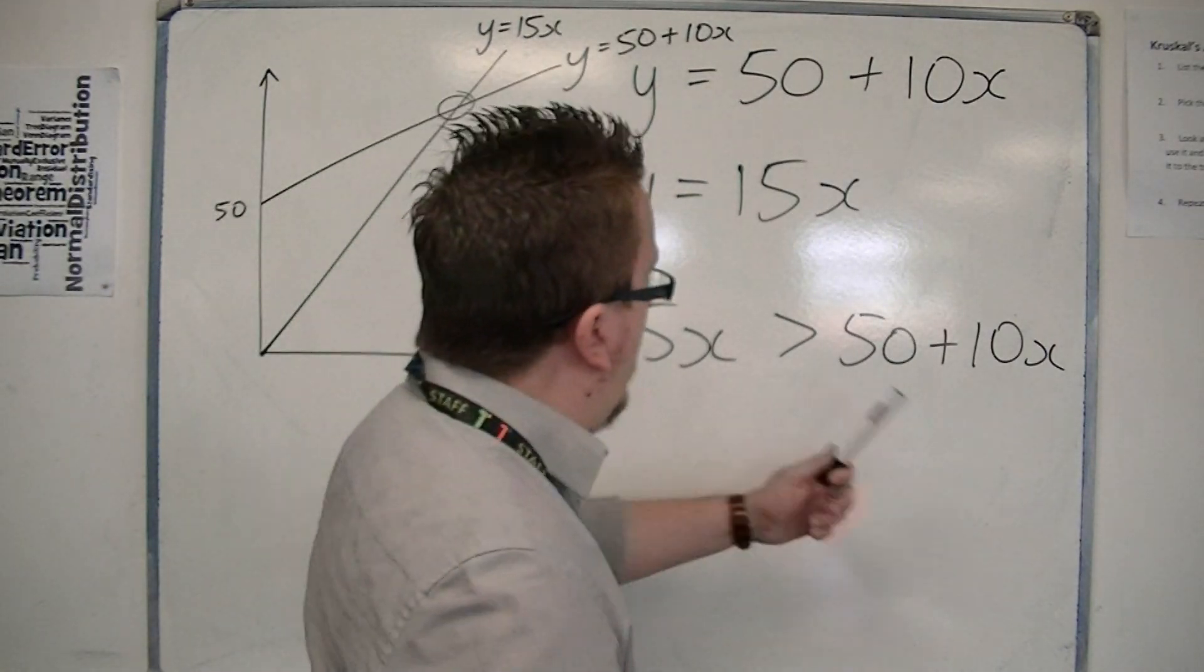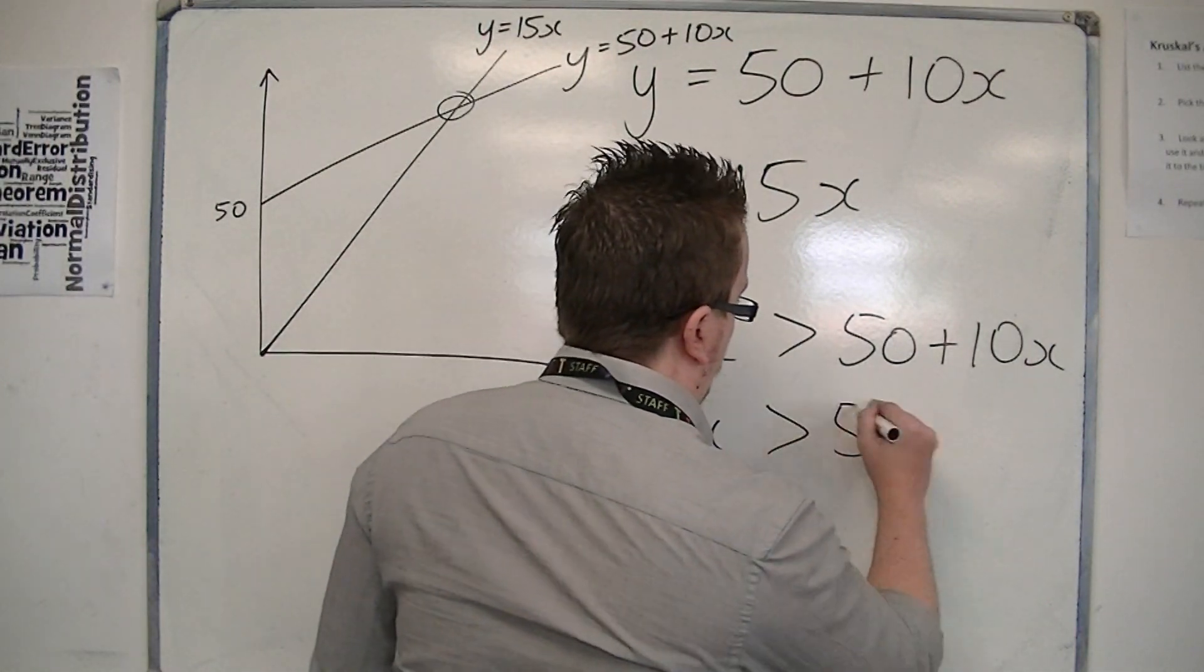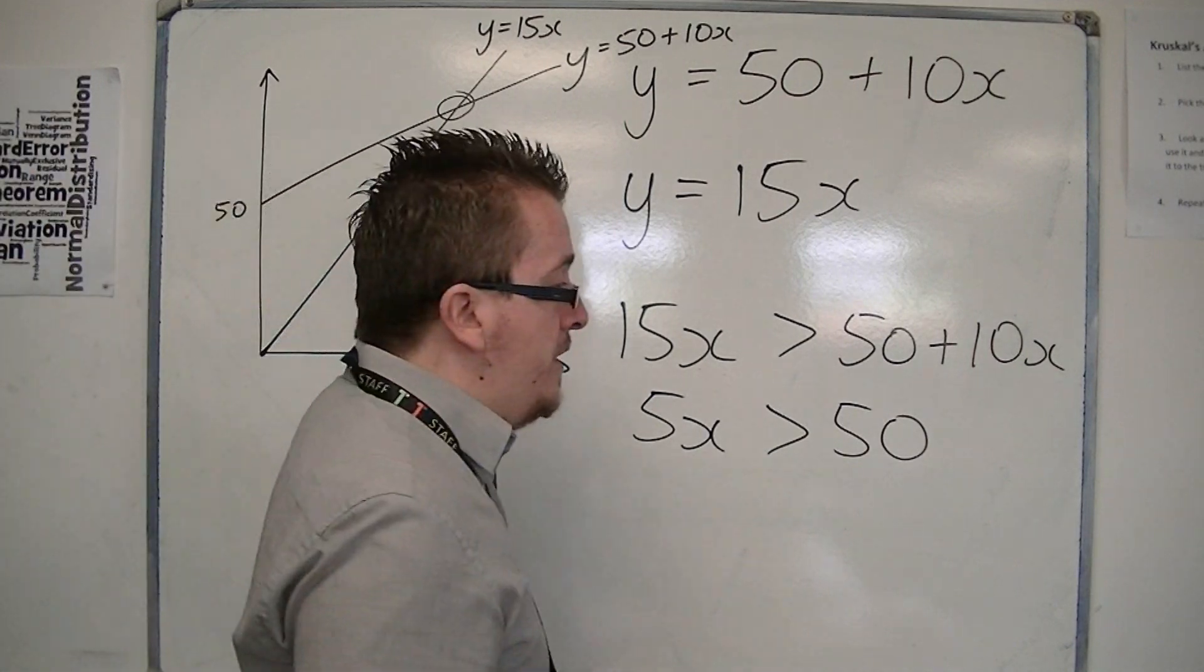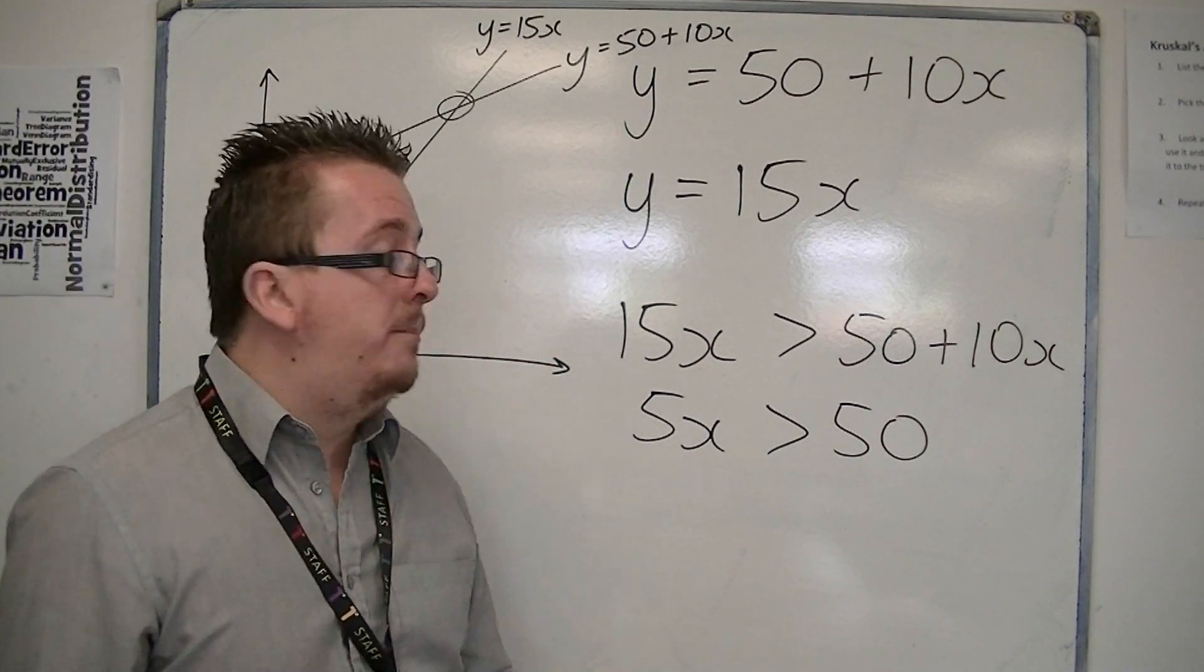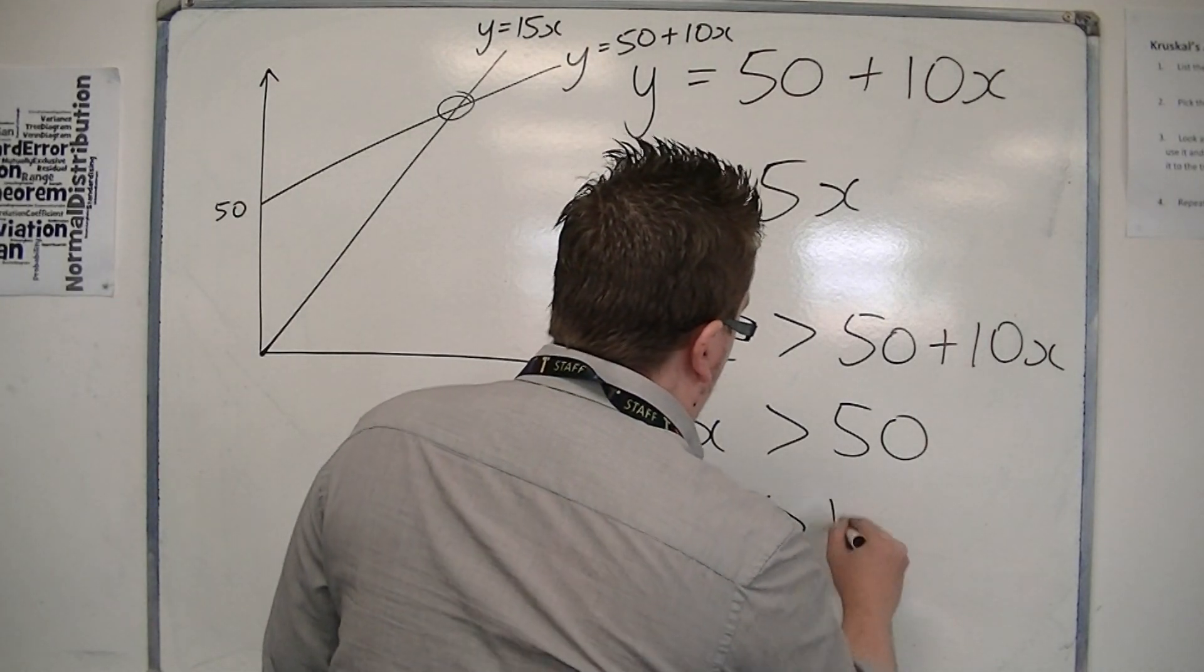So I can take 10x from both sides, and then I can divide both sides by 5, and because I'm dividing by a positive number, the inequality sign doesn't change. So x is greater than 10.